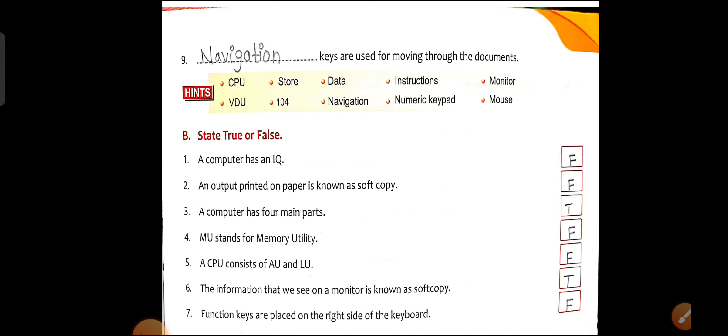Point number 7: Function keys are placed on the right side of the keyboard. This is False. Function keys are placed on the top of the keyboard. They start from F1 to F12 and are used for special tasks.